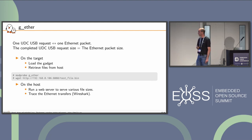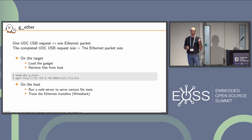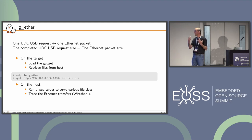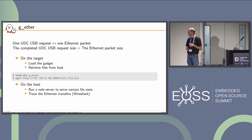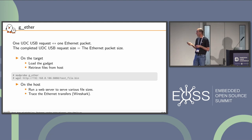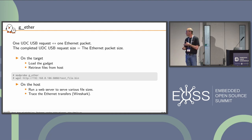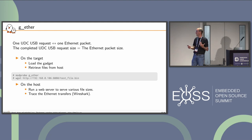For the Ethernet gadget: there is one UDC USB request per Ethernet packet, and when the UDC completes the request and gives it back to the core, the request size should exactly match the Ethernet packet size. On the target, load the gadget and configure the IP address; then use wget to fetch files from your host. On the host, run a web server and verify the Ethernet transfer size matches the USB request size when requests complete.